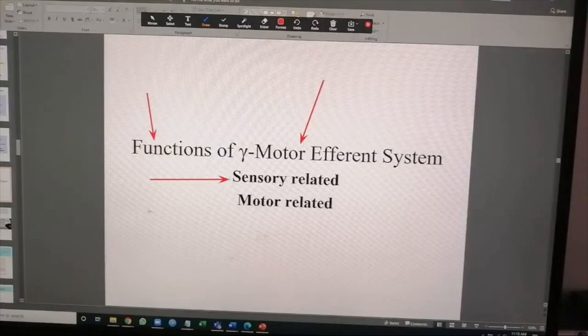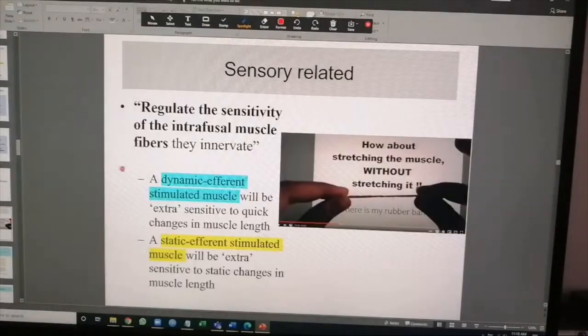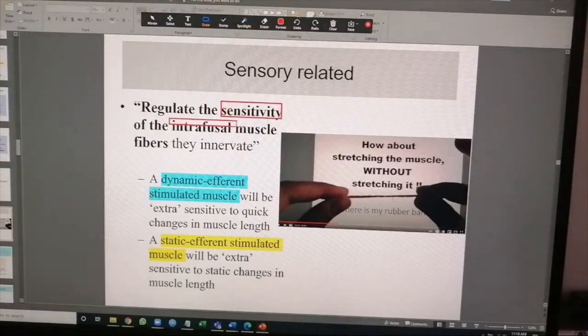Functions of the gamma motor efferents are twofold: sensory related and motor related. Sensory related, this one line says it all: it regulates the sensitivity of the intrafusal muscle fiber. That's it. If you remember this, you are good to go.